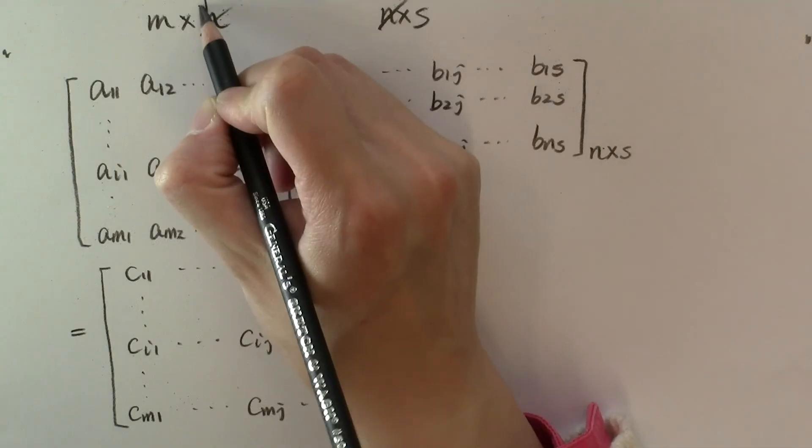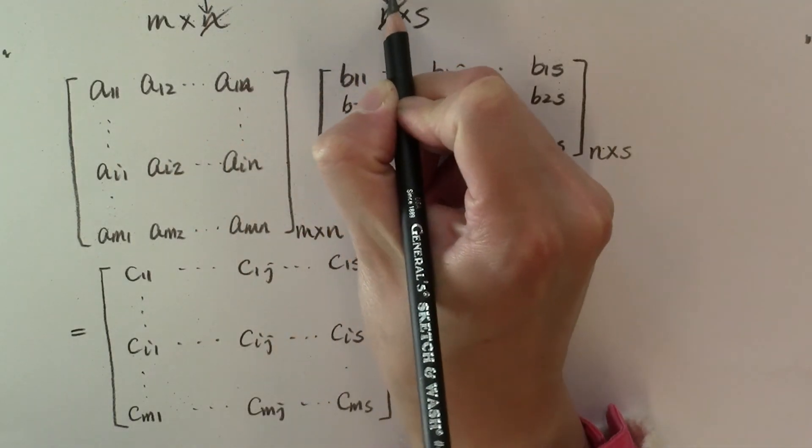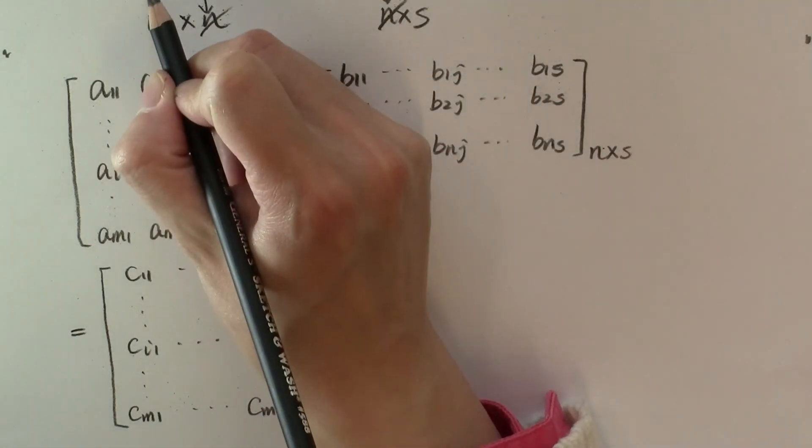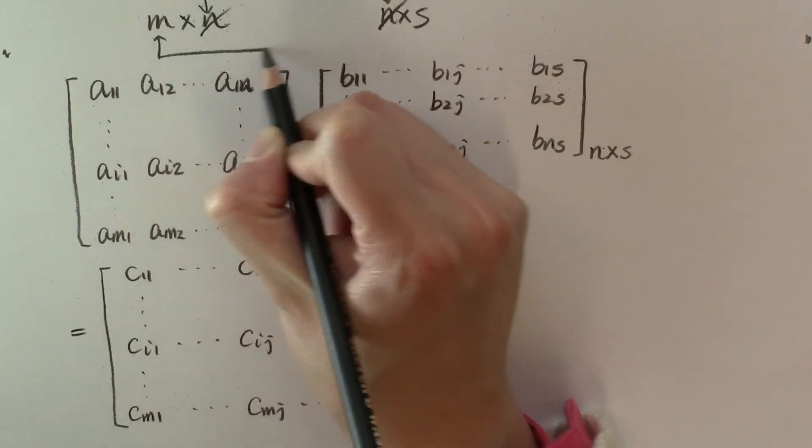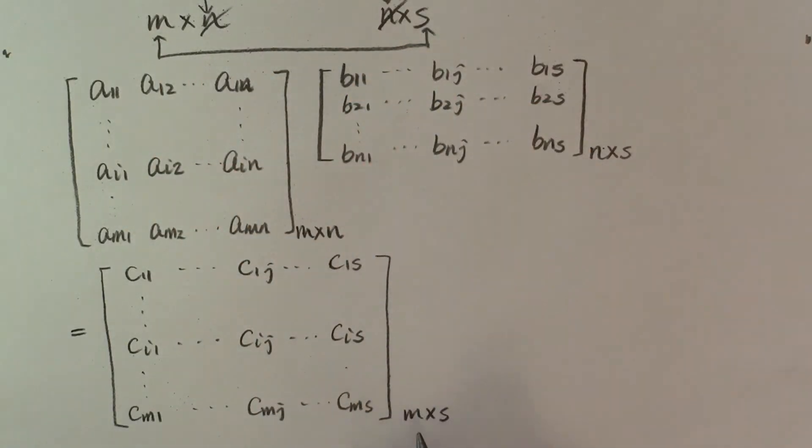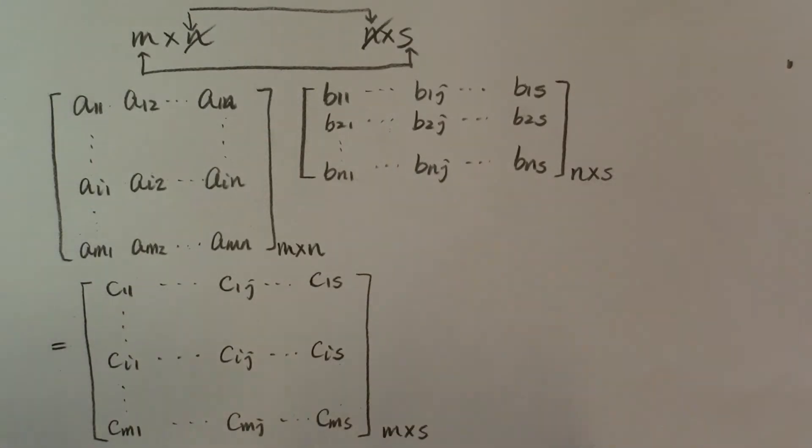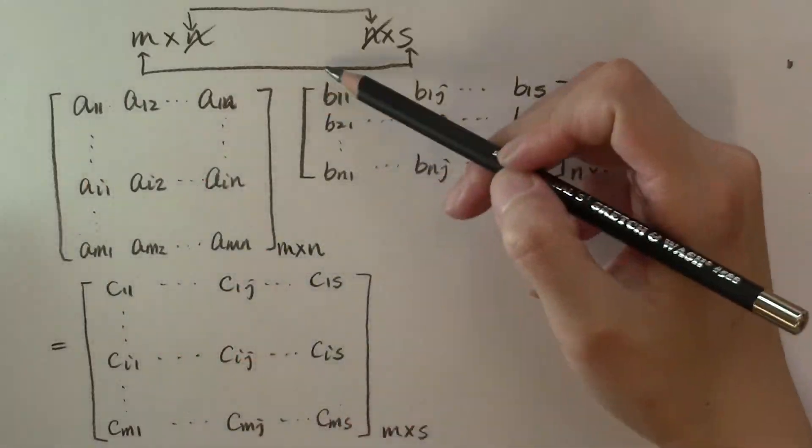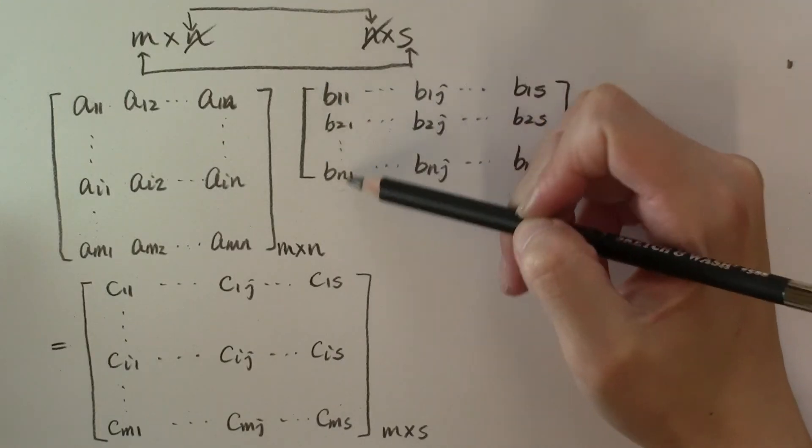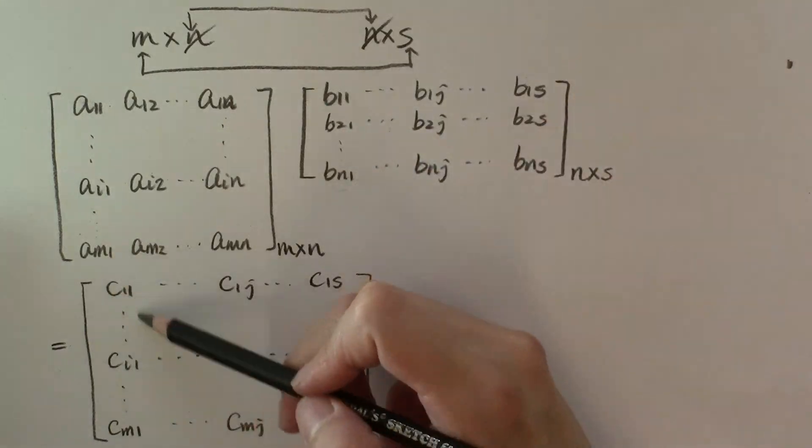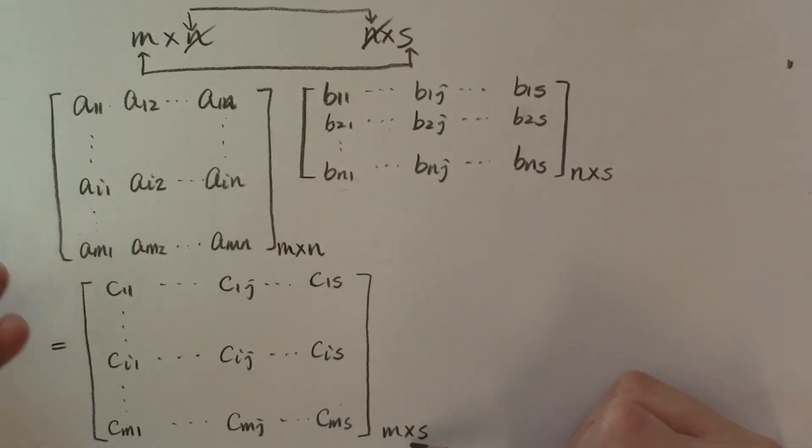You can think of it as canceling out the inner dimensions of the two matrices and taking the outer dimensions to form the dimension of the product. And the definition of this product matrix is very natural. Simply multiply the matrix A to each column of matrix B and put that in the corresponding column of matrix C.